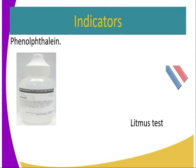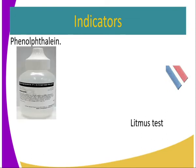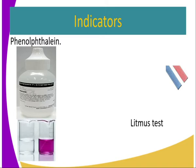Phenolphthalein indicator has two definite colors. It is colorless in neutral substances. It is also colorless in acidic substances. And it is pink in basic substances.